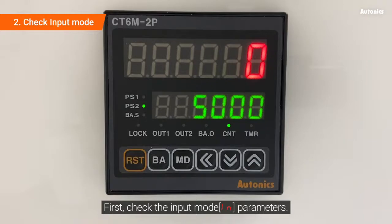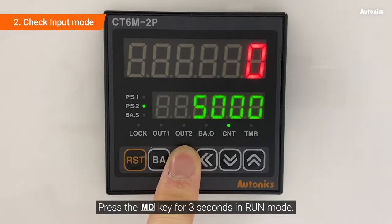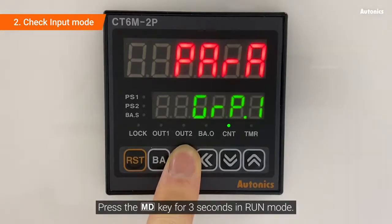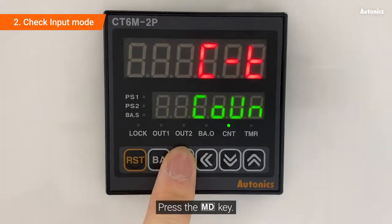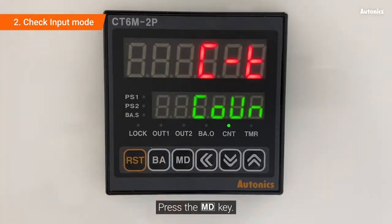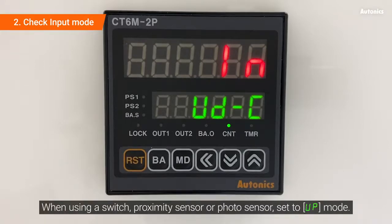First, check the input mode, IN parameter. Press the MD key for 3 seconds in run mode. Press the MD key. UD-C is an encoder-only mode. When using a switch, proximity sensor, or photo sensor, set to UP mode.